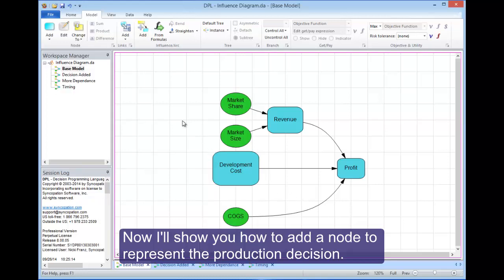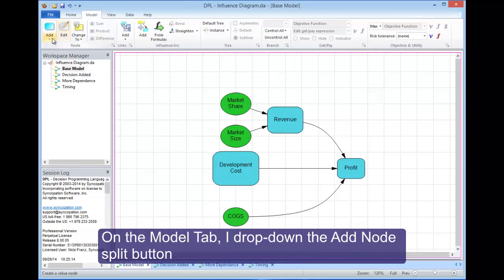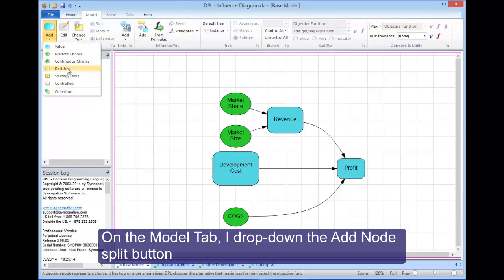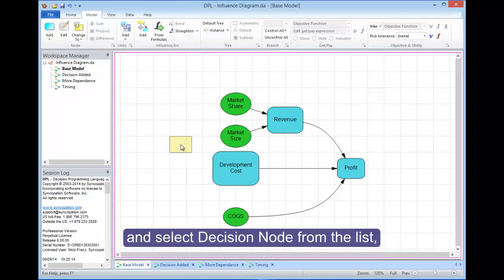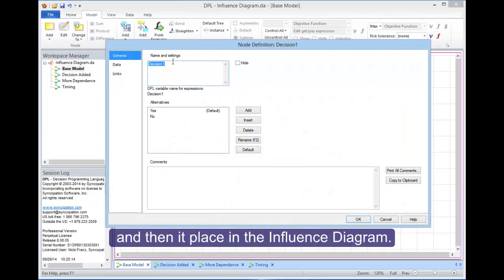Now I'll show you how to add a node to represent the production decision. On the model tab, I drop down the add node split button and select decision node from the list, and then place it in the influence diagram.